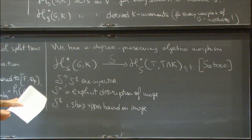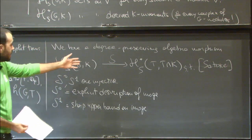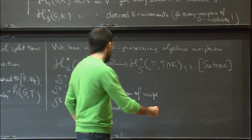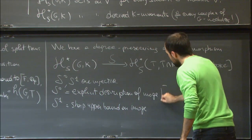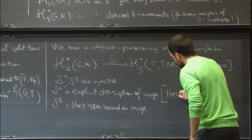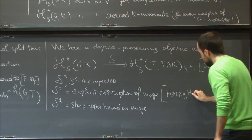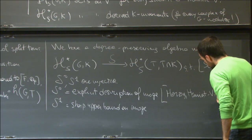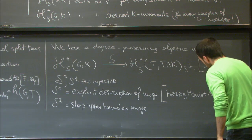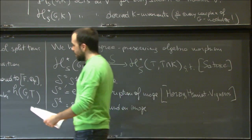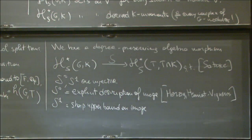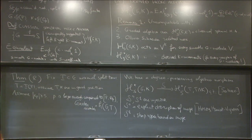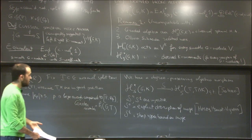Since H₀ is a classical object, S₀ has been studied before — this is work of Herzig, and later Henniart and Vignéras. The real meat in this theorem is really the degree one part, which is what we want to produce operators that will increase the degree.